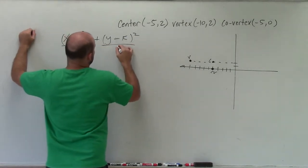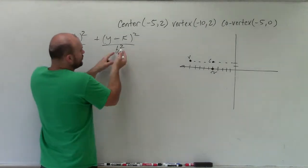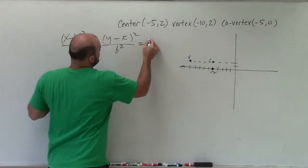When the major axis is horizontal, we put the a under the x. When it's vertical, we put the a under the y.